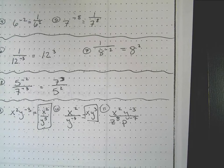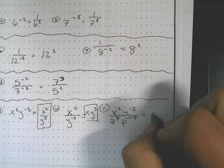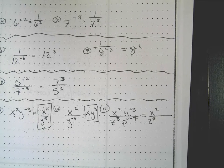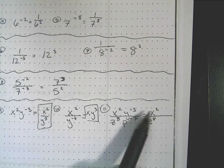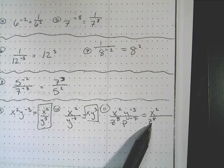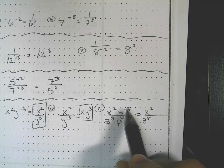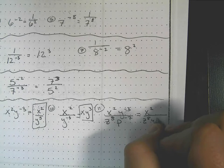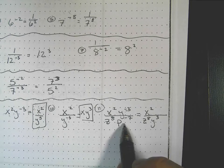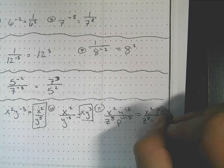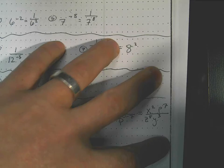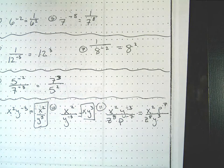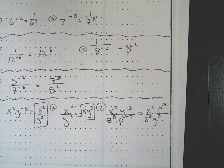For the last example: x²y to the negative three over z to the eighth times p to the negative seven. Things with positive exponents stay put — x² stays up top, z to the eighth stays in the denominator. Y to the negative three is in the numerator with a negative exponent so it moves down. P to the negative seven is in the denominator with a negative exponent so it moves up. That's how we deal with negative exponents — they just move things around the fraction bar. Thanks for watching and have a great rest of your day.